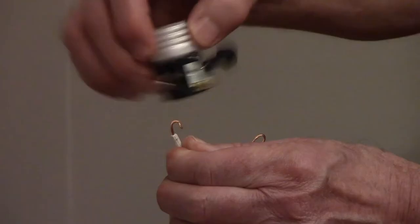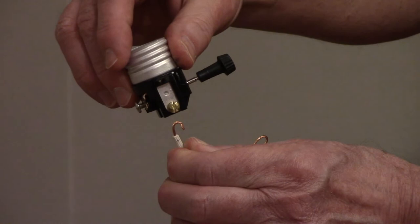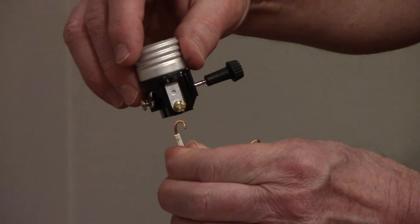With your loop, wrap it around the screw terminal in a clockwise direction. If you wrap it counterclockwise, it could potentially push off from the screw.